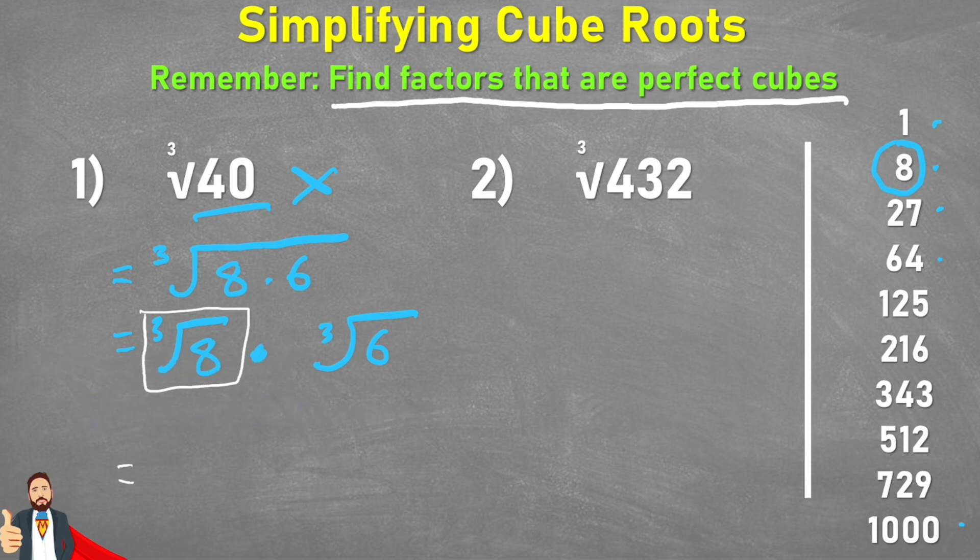So therefore I can rewrite that little part as just 2. And then I can say that that's multiplied by the cube root of 6. And that is now our simplified form. 2 multiplied by the cube root of 6.